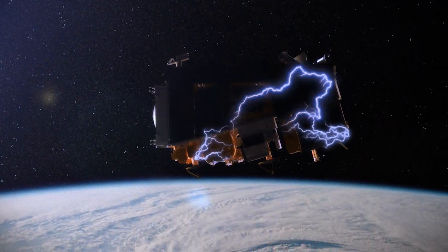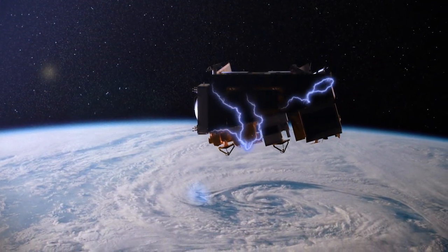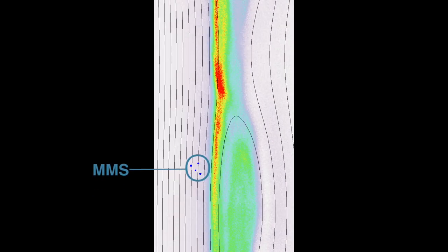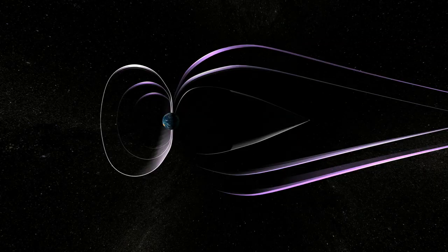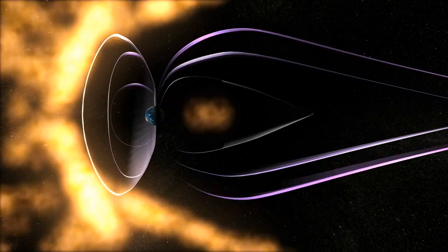A critical phenomenon to understand when protecting our satellites and astronauts. On October 16, 2015, MMS traveled straight through a magnetic reconnection event at the boundary where Earth's magnetic fields bump up against the Sun's magnetic fields.